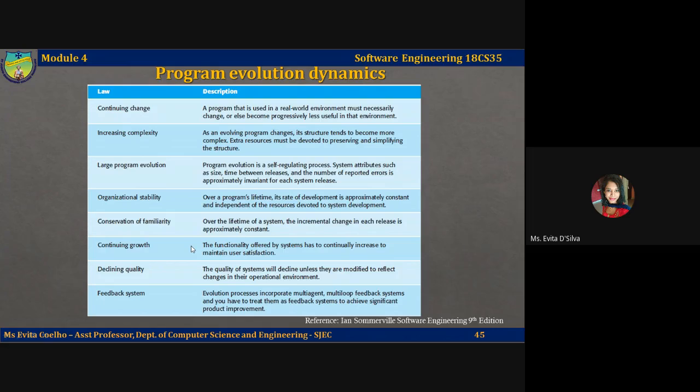Now, the first five laws were in Lehmann's initial proposals. The remaining laws stated are added after further work. The sixth law, continuing growth: the functionality offered by systems has to continually increase to maintain user satisfaction. The next law, declining quality: the quality of systems will decline unless they are modified to reflect changes in their operational environment.